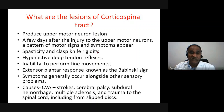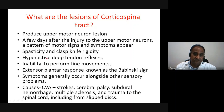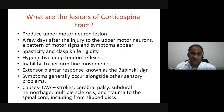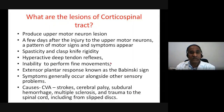The tendon reflexes become exaggerated on the opposite side. For a right internal capsule lesion, the left tendon reflexes are exaggerated. The person cannot perform fine movements because the lateral corticospinal tract is necessary for fine movements. The most likely causes of these lesions include hemiplegia due to hemorrhage of the middle cerebral artery involving the internal capsule, cerebral palsy, subdural hemorrhage, multiple sclerosis, and trauma to the spinal cord — even cutting the spinal cord removes the corticospinal tract input from above.